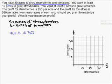Furthermore, they told me that I wanted at least 10 acres to grow strawberries. Well, if S is my variable for strawberries then S has to be greater than or equal to 10, and furthermore they told me I wanted at least 5 acres to grow tomatoes so T is greater than or equal to 5.